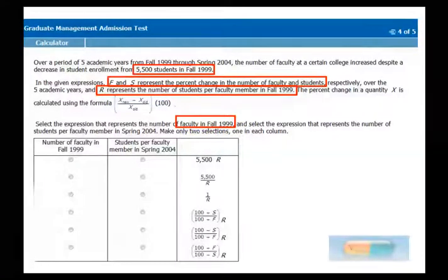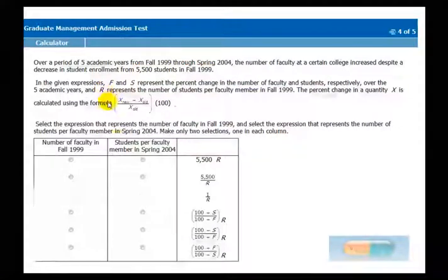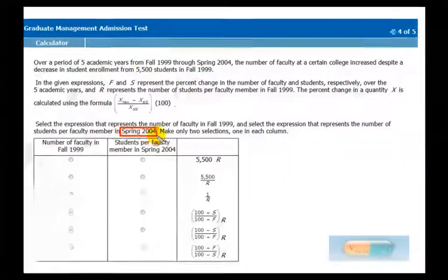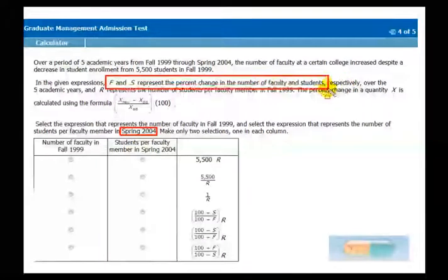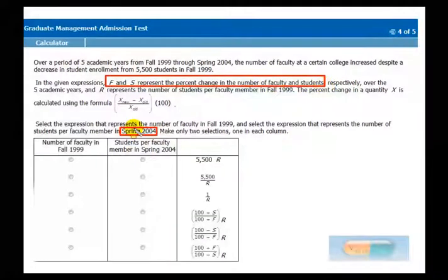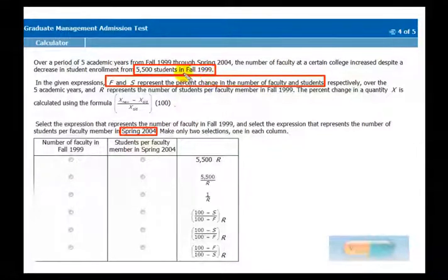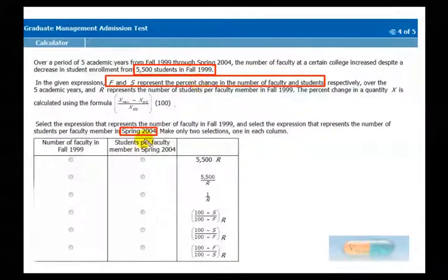Then you were asked to find the ratio in 04, and in order to get that, you have to combine that with the amount of change that happened, as well as the original number of students in 1999. So for the second part, you combine this piece with this piece to get this final piece.